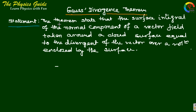Gauss's divergence theorem states that the surface integral of the normal component of a vector field taken around a closed surface equals the divergence of the vector over the volume enclosed by that surface.